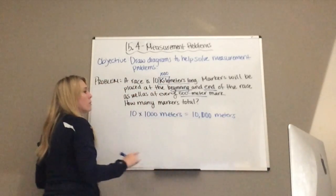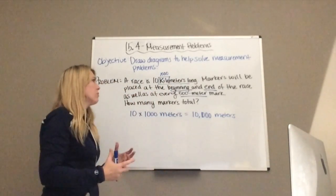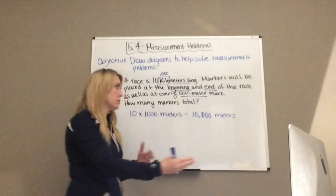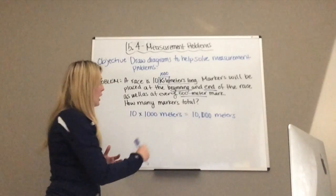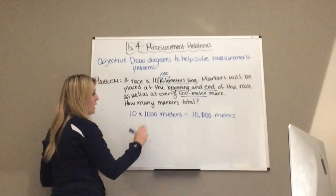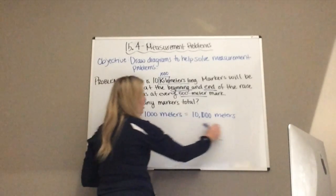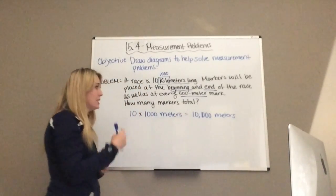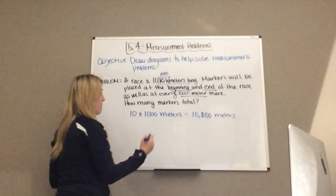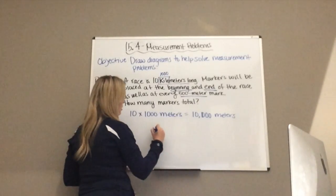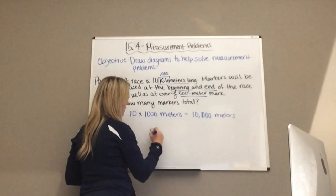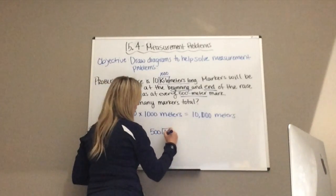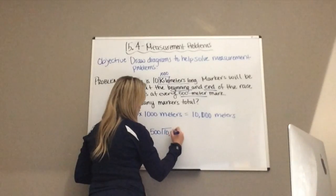Now, I only have markers every 500 meters, so I do not need all 10,000 meters. I need to divide 10,000 by 500. So 500 divides into 10,000.